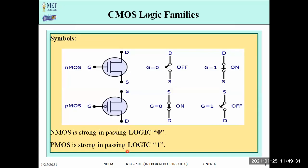Now let us examine NMOS and PMOS symbols. NMOS (N-channel MOS) has terminals: Drain, Source, and Gate — represented with a simple gate symbol. PMOS also has Source, Drain, and Gate, but the gate is shown with an inversion bubble, meaning the gate input is complemented. If we give logic 1 to the NMOS gate, the switch turns ON; if we give 0, it turns OFF.